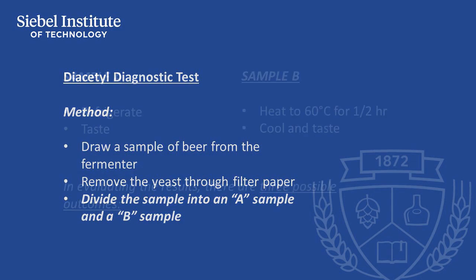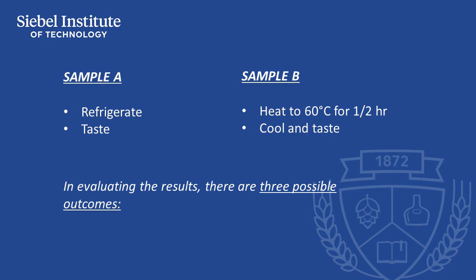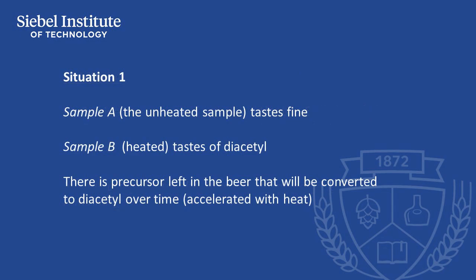With sample A, we refrigerate it and taste it. With sample B, we heat it to 60 degrees Celsius for half an hour, then cool it and taste it. In evaluating the results, there are three possible outcomes. Situation number one: sample A, the unheated sample, tastes fine, but sample B, the heated sample, tastes of diacetyl.